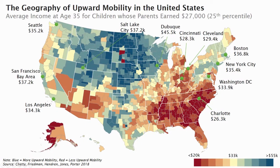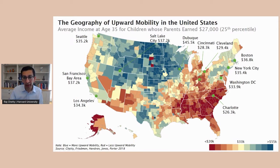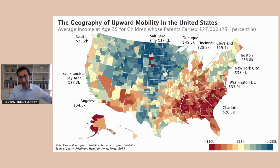We split the U.S. into 740 different metro and rural areas and calculated upward mobility — the average income at age 35 for kids who grew up in low-income families at the 25th percentile, earning about $27,000 a year. Red and orange areas have lower levels of upward mobility; blue-green areas have higher levels. Places in the center of the country, like Dubuque, Iowa, show kids from low-income families reaching about $45,000 in adulthood, whereas in much of the southeastern U.S. or cities like Cincinnati, Detroit, or Charlotte, those same kids have lower incomes on average in adulthood.